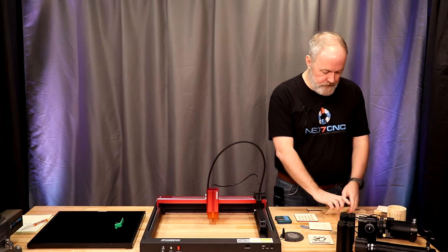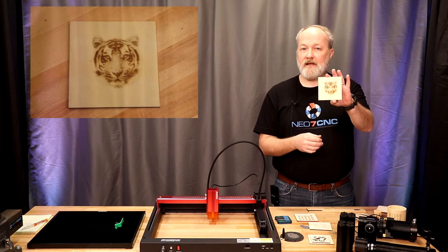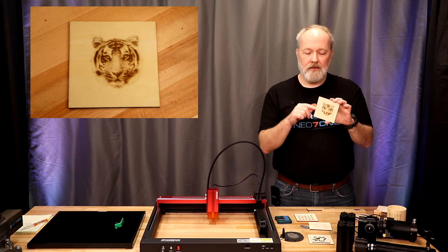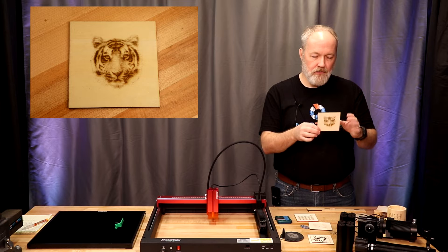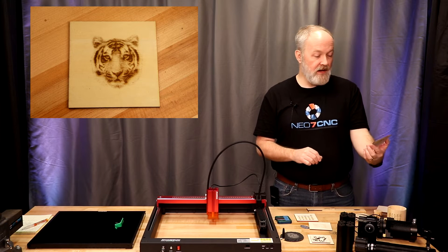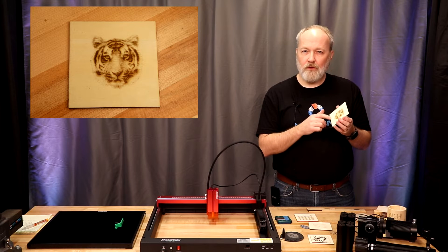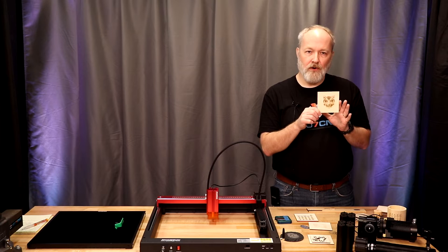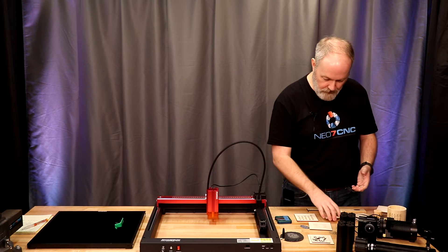From there, I moved on to this tiger head and I'm just using these coaster blanks from Amazon. I'll have links to all these materials that I use down below. That's usually where I get everything from. That tiger head turned out good. You're fighting the wood grain on this particular print. I probably could have gone even darker, but it did turn out fairly well.